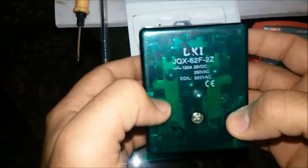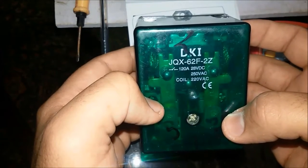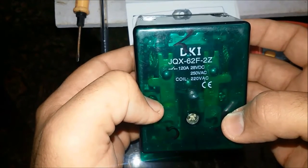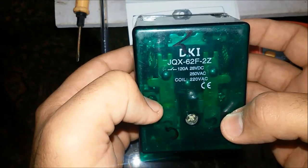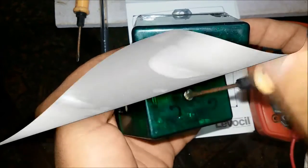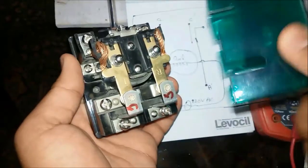The coil voltage is 220V AC, the line voltage is 28V DC and 250V AC. The current rating is 120A. This is the two pole AC relay which has eight terminals.